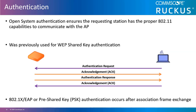Open system authentication always exists even when more complex authentication methods are in use, so that the station and the access point can at least create a layer 2 connection to exchange information required by more complex authentication methods. Open system authentication is a simple four-frame exchange between the station and the access point prior to the client association process.